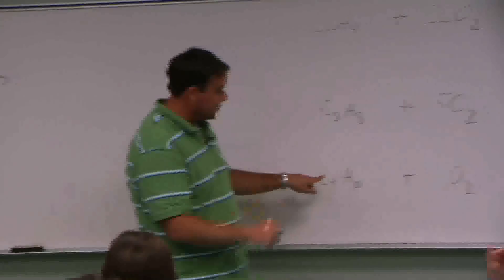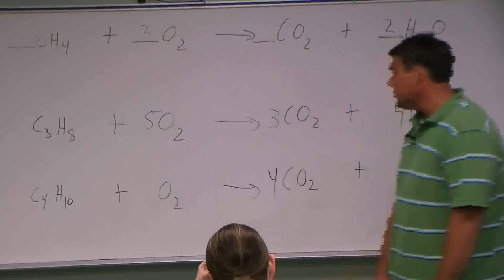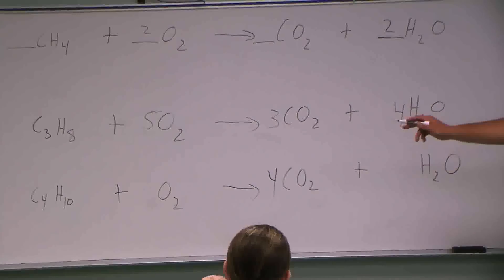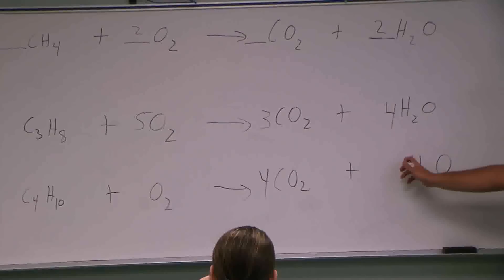So let's look at this one. Let's balance this guy. Four carbons here. How many do we have over here? Four. Okay. Ten hydrogens. How many we got to have? Ten. So what do I got to put here? Five.